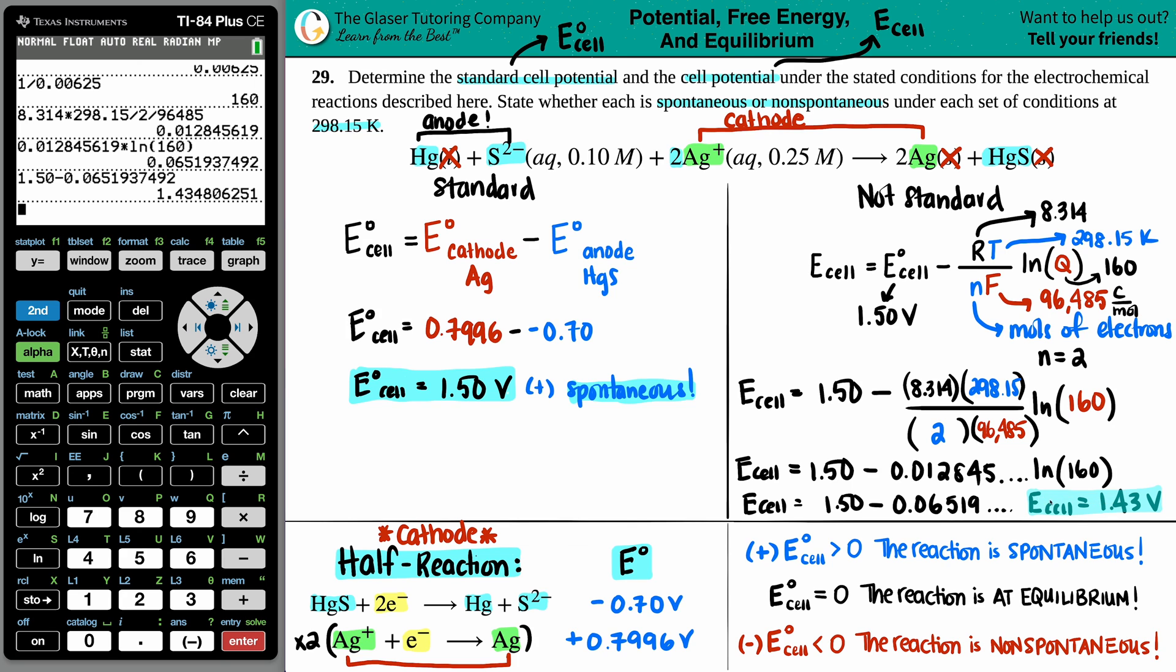Okay. So, oh, and last thing is we just have to find out if this is spontaneous or not spontaneous. It's still a positive value. So this will still be spontaneous. And there you go. So both of them are spontaneous, but this one a little bit less so. We're dropping in value, but I hope this really helps you out.